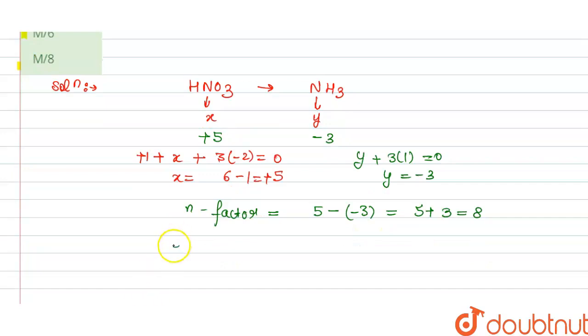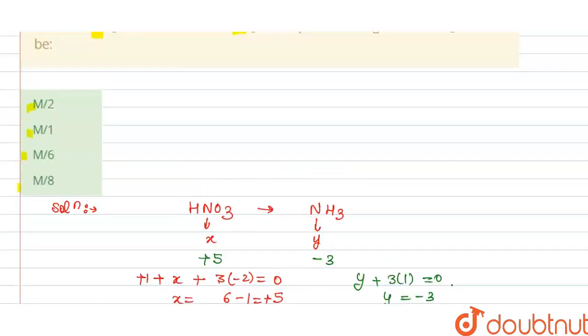And we have the equivalent weight is equal to molecular weight divided by n factor. So molecular weight, let's suppose is M, and this is divided by n factor that is eight. So this is the answer for this question.